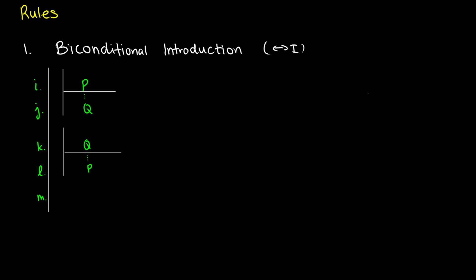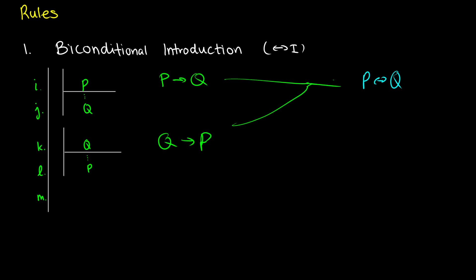Remember, biconditional basically means that if we have P if and only if Q, then P and Q have the same value — so if P is true, Q is true; if P is false, then Q is false. So what this means in terms of an actual proof is that if we assume P and we get to Q, so if we get P arrow Q, and if at some point we prove that if we have Q then we get P, well the biconditional is just the arrow going in both directions. So if we have both of these being true, then we're going to get that P is the same as Q.